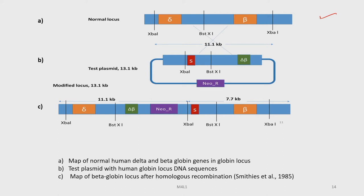You can see a map of the normal human delta and beta globin genes, the test plasmid with human globin locus DNA sequences, and the map of the beta-globin locus after homologous recombination, showing all elements transferred into the construct due to homologous recombination.